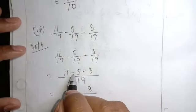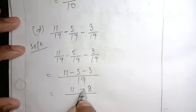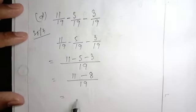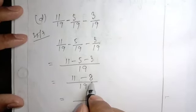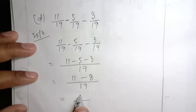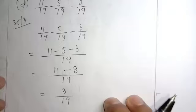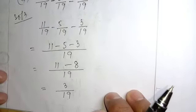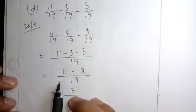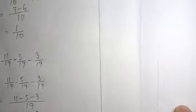They have the same symbol, we will take up that symbol. 11 minus 8 is how much? 3 by 19. So here, we finish solving D. Let me solve one more question.